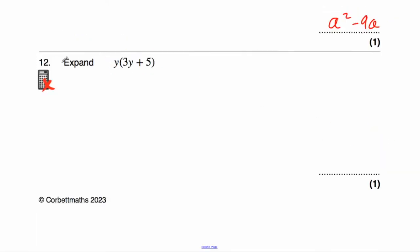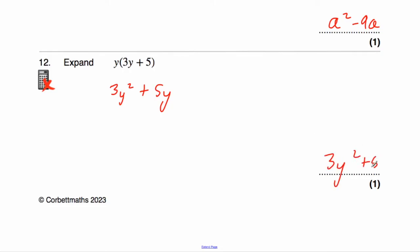Question number twelve asks us to expand y(3y + 5). We need to multiply what's inside the brackets by y. y times 3y — y times three y would be three, and then y times y is y squared — so y times 3y would be 3y². Plus, and then y times five would be 5y. The answer is 3y² + 5y.